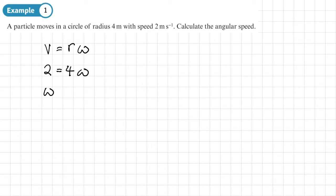That's easy enough to rearrange. Divide both sides by 4, so we get angular speed is 2 over 4 or half. And our units are radians per second.